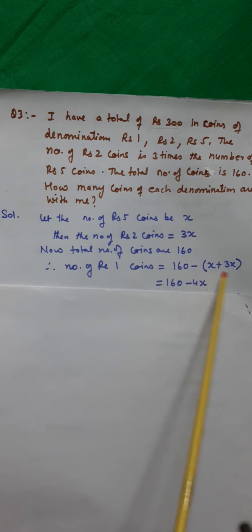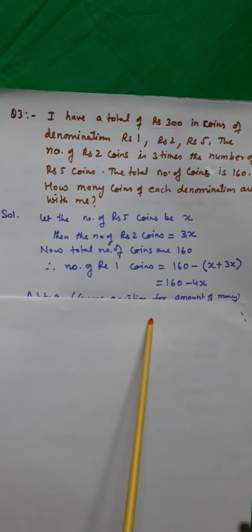Now, total number of coins are 160. Therefore, number of 1-rupee coins will be 160 minus their sum. That means 160 minus (x plus 3x), which gives 4x. So, 160 minus 4x is the number of 1-rupee coins.